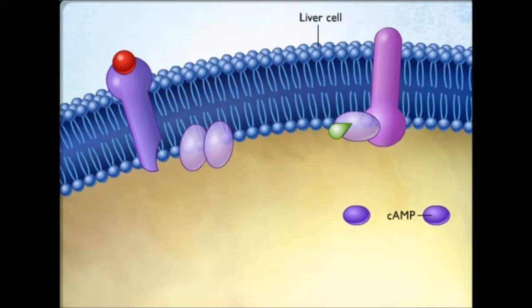The cAMP formed at the inner surface of the membrane diffuses within the cytoplasm, where it binds to and activates protein kinase A, an enzyme that adds phosphate groups to specific cellular proteins.